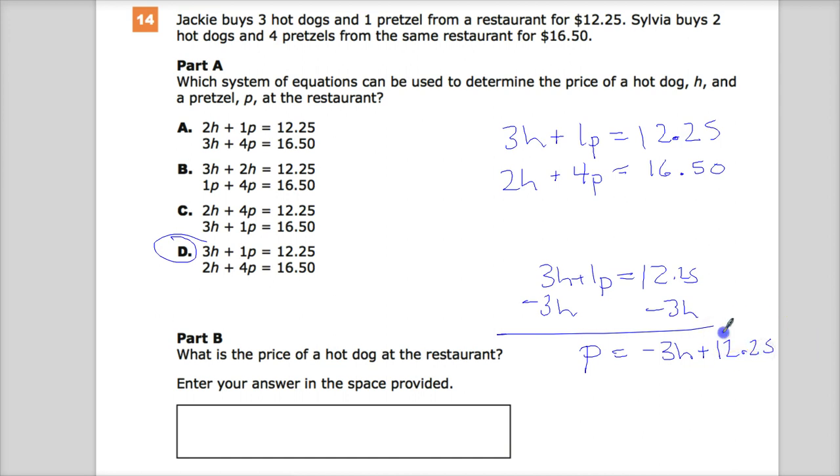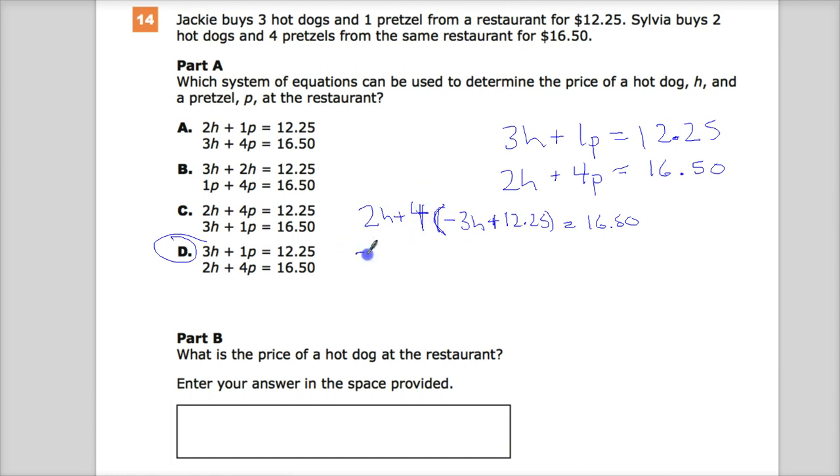Now, what I can do is take this whole thing and go back up to one of the equations, the one we just used or the other, and substitute in this every time I see this. So 2 hot dogs plus 4 times negative 3h. My writing's horrible today.